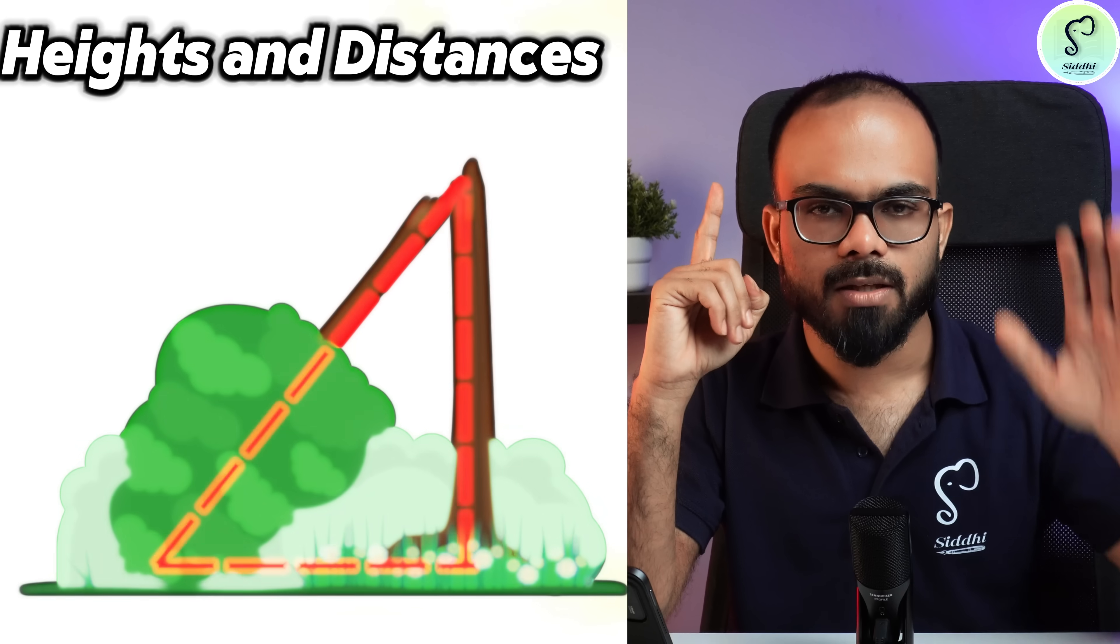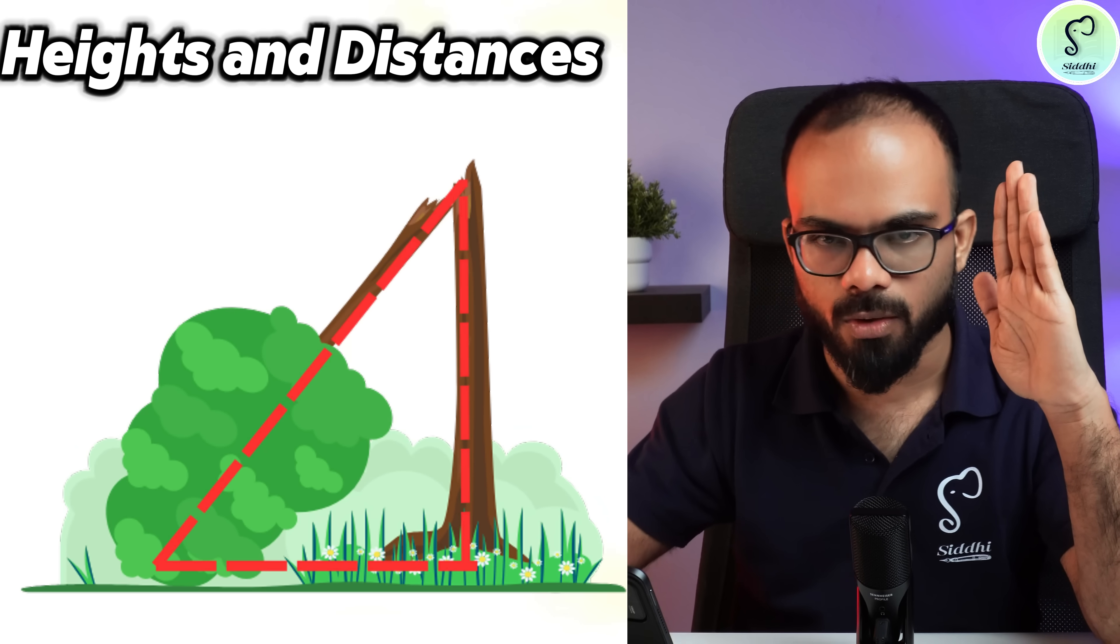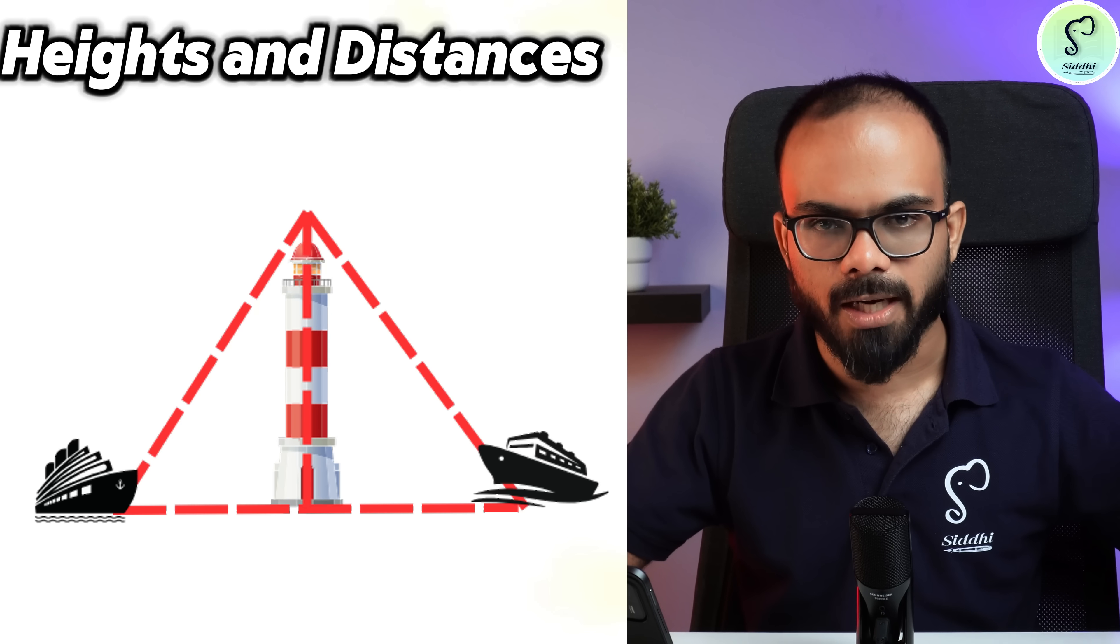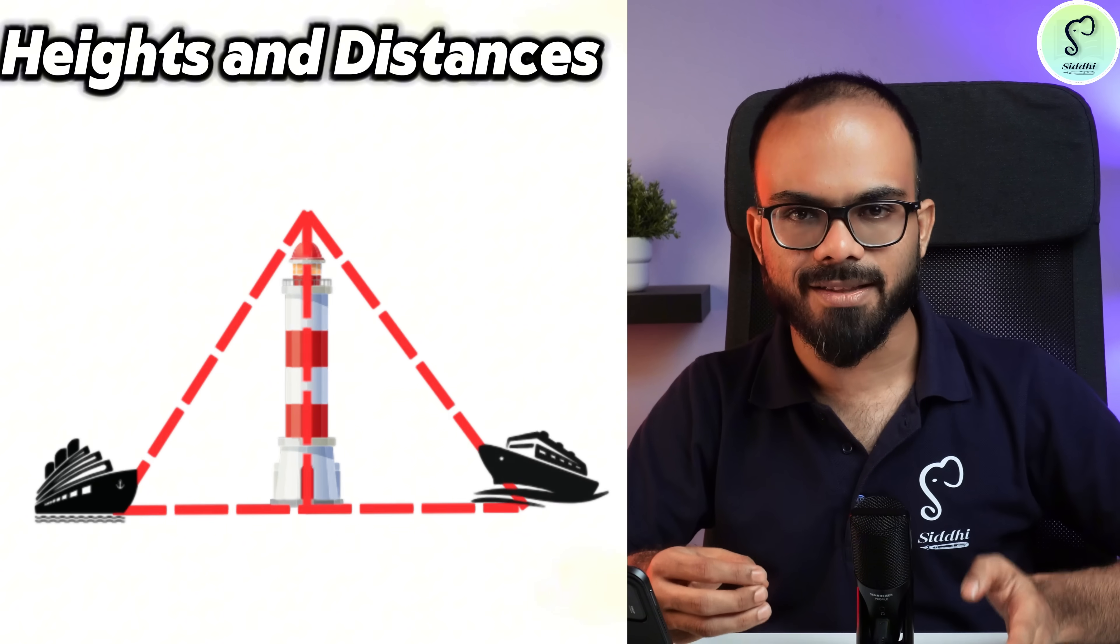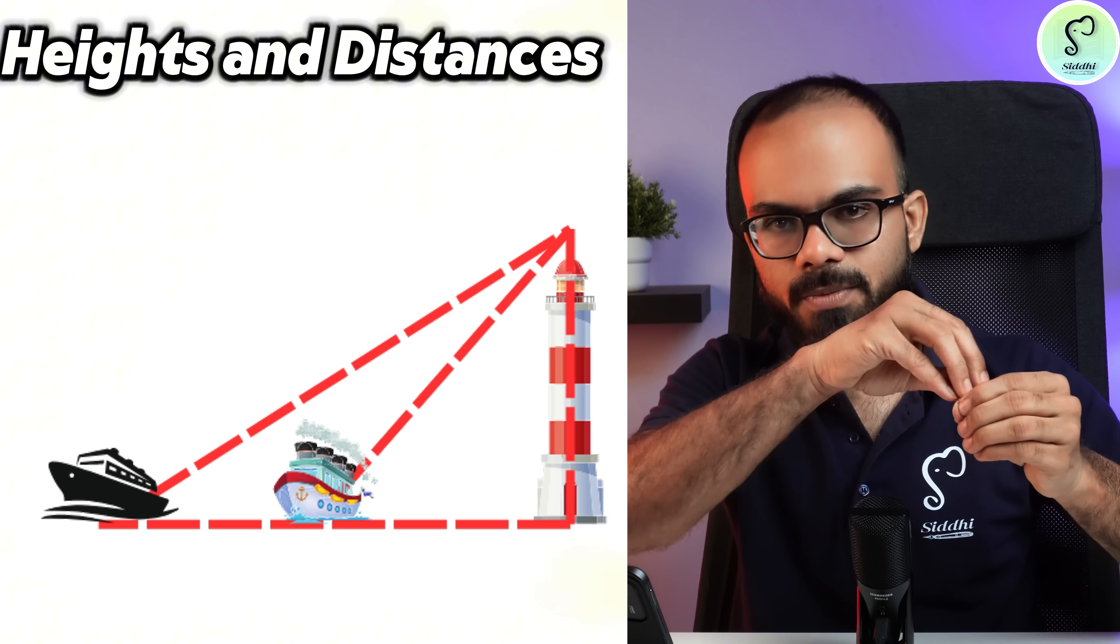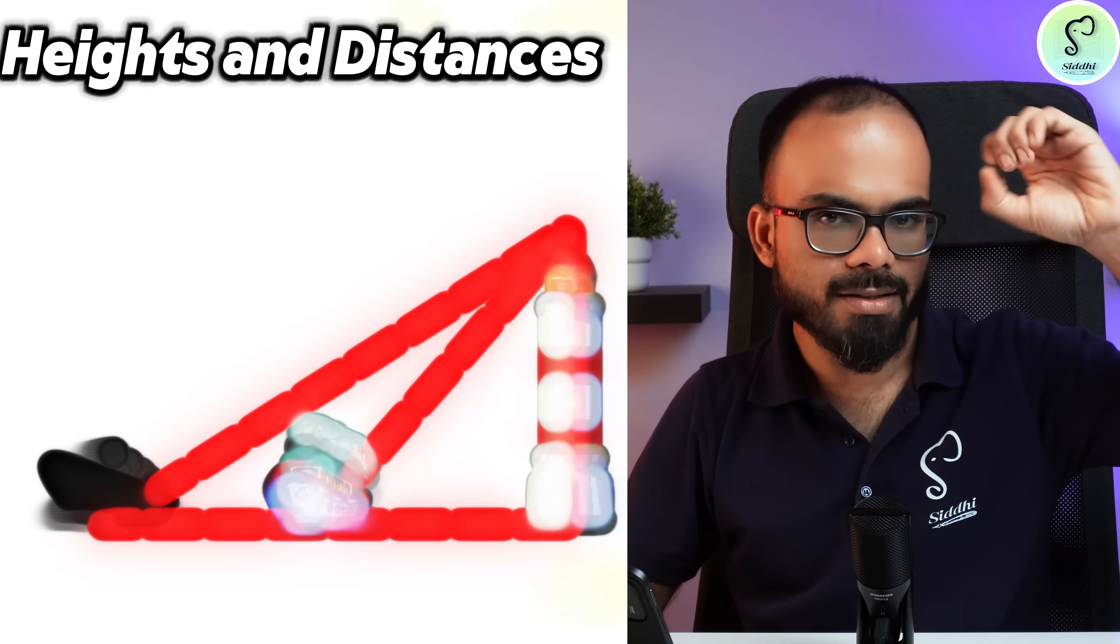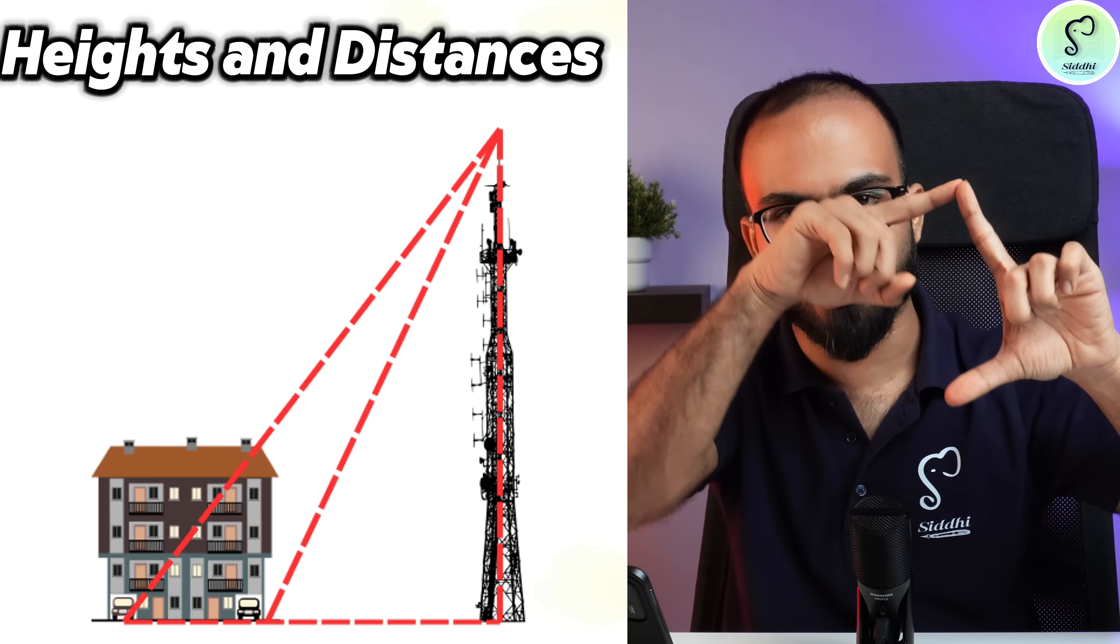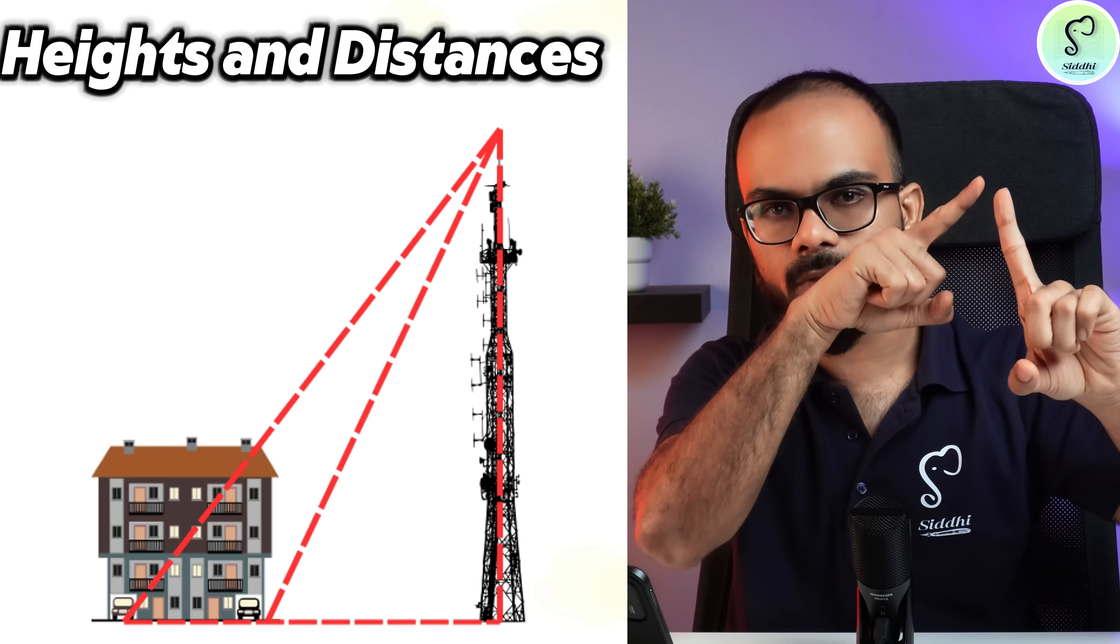Next important topic is heights and distances. Height and distances is very easy provided you know the concept. There are four major questions that are extremely important. Question number one: there is a tree that was broken into half and fell down. Question number two: there are two ships and a light post, two ships approaching the light post from opposite directions. Third: there is a light post, there are two ships, two ships are traveling away from the light post. Four: there is a tower, there is a building, and you have an angle of depression with respect to the top of the building from the top of the tower and an angle of depression from the top of the tower to the foot of the building. These are extremely important. Practice these at all costs.